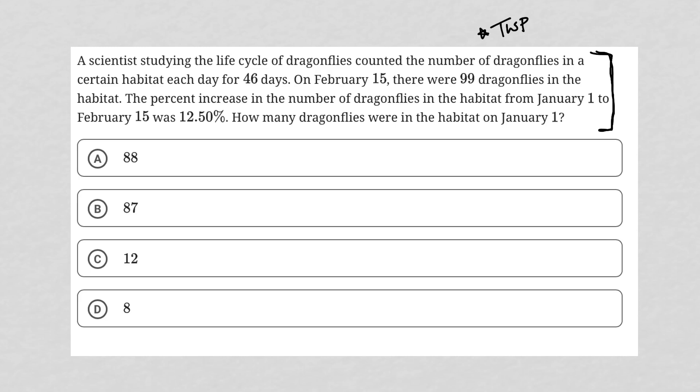The first sentence says a scientist studying the life cycle of dragonflies counted the number of dragonflies in a certain habitat each day for 46 days. I'm just write down 46 days, right, I remember what's going on during those 46 days. I just write that number down.